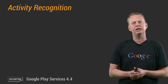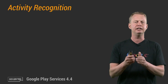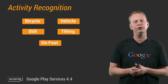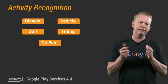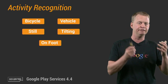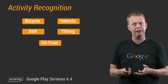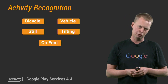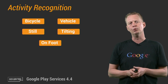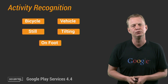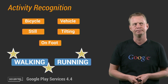Let's get right to it and start off with activity recognitions in the Locations API. As you hopefully already know, it has previously been possible to detect if the device is on a bicycle, in a vehicle, if it's still, if it's being tilted, or on foot. We decided to add some more, and we are now happy to introduce two more activities: walking and running.